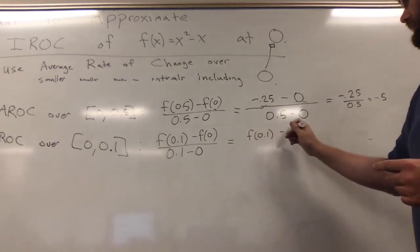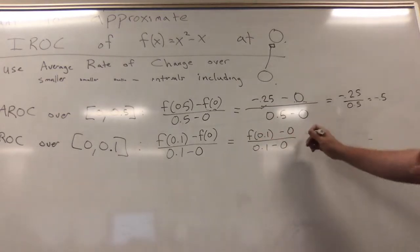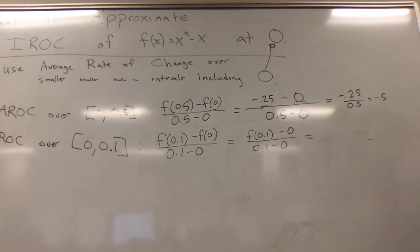I know that this is 0 because I already calculated that. So f(0.1) - 0 over 0.1 - 0 equals negative 0.9.